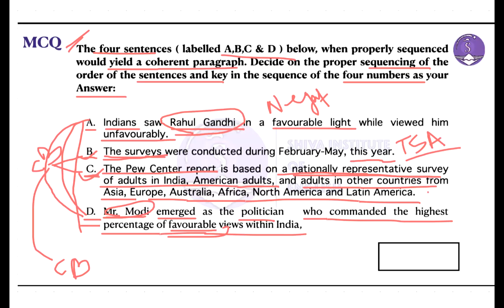Together, the sequence could be D-A-C-B. On the basis of that idea, we could say the sequence should be D-A-C-B — that would be the perfect sequence we could make here.